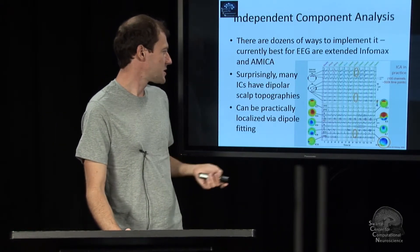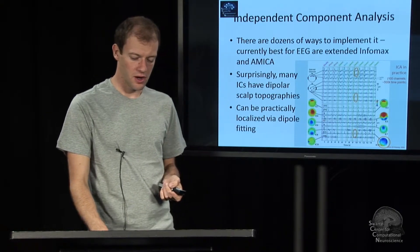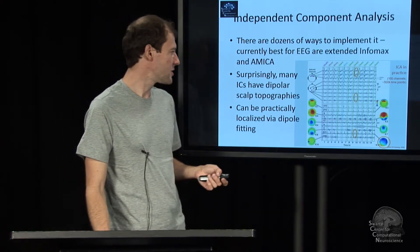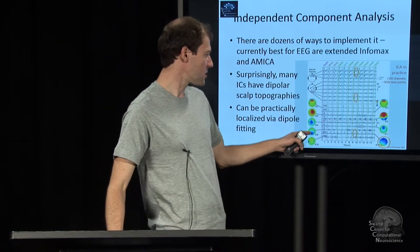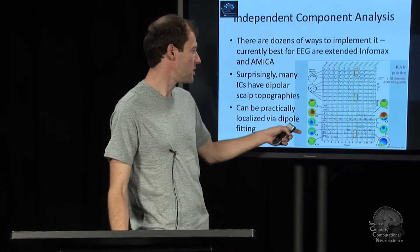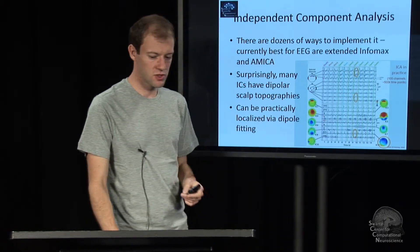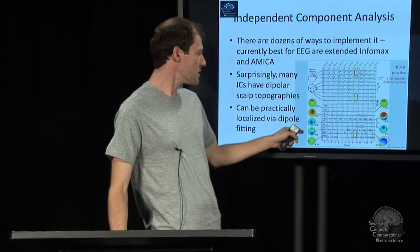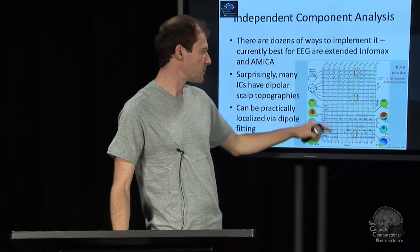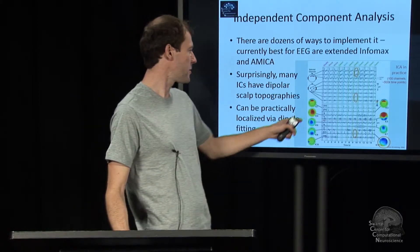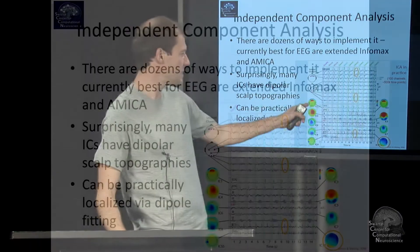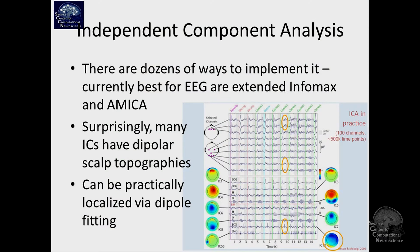What's actually not really clear in advance intuitively is why these things should have these kinds of dipolar, biologically plausible, spatially organized topographies. Because all you did is apply a statistical criterion based on the time courses. This method knows absolutely nothing about where the channels are located, and it could learn completely scrambled weight maps, but it doesn't.